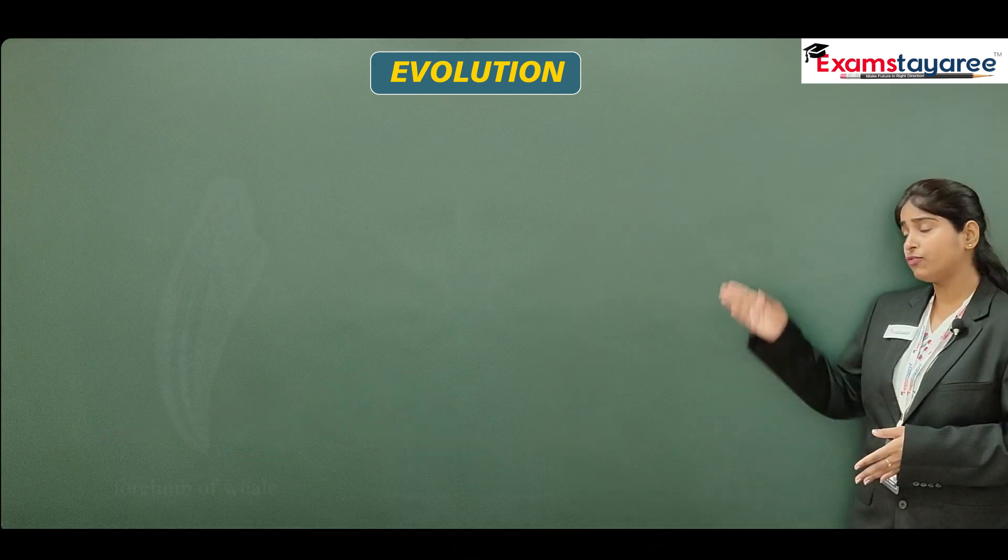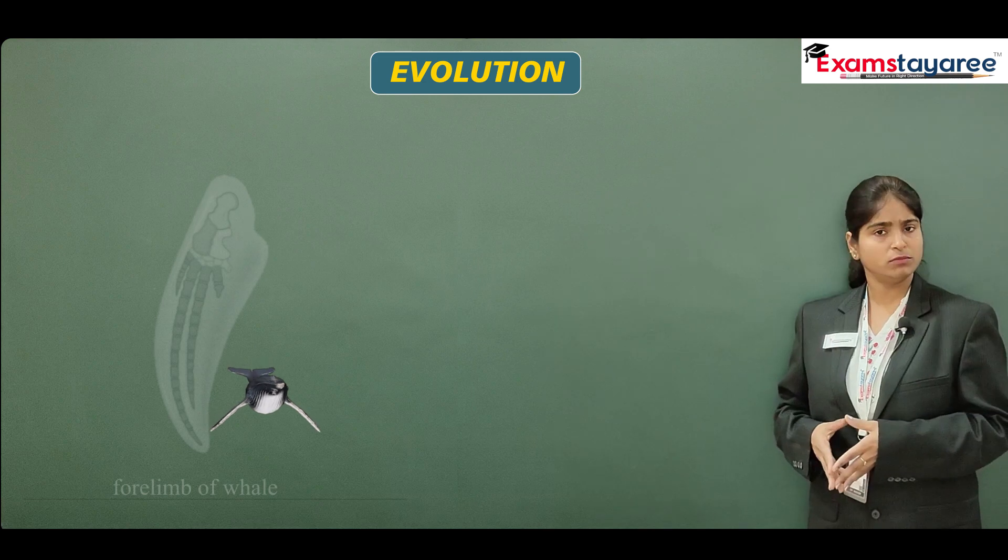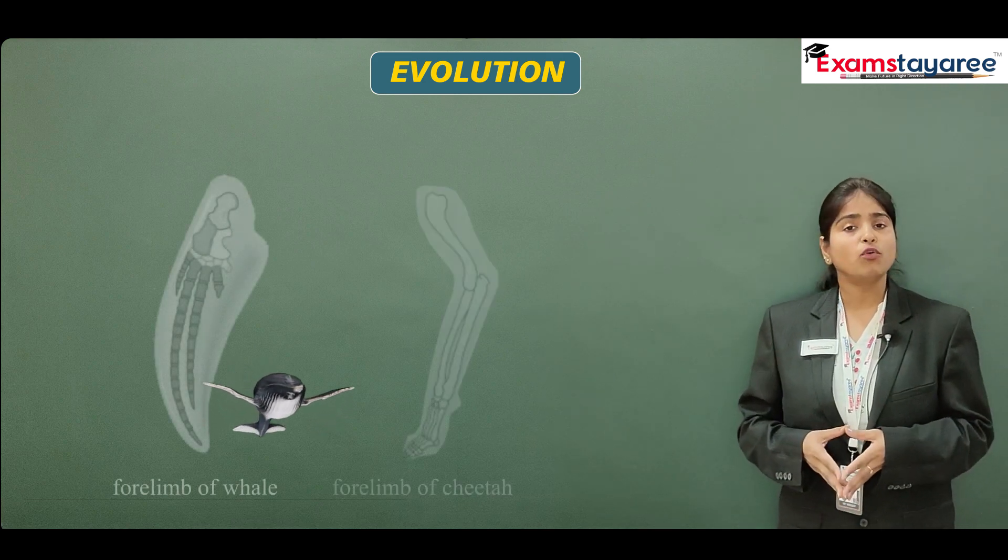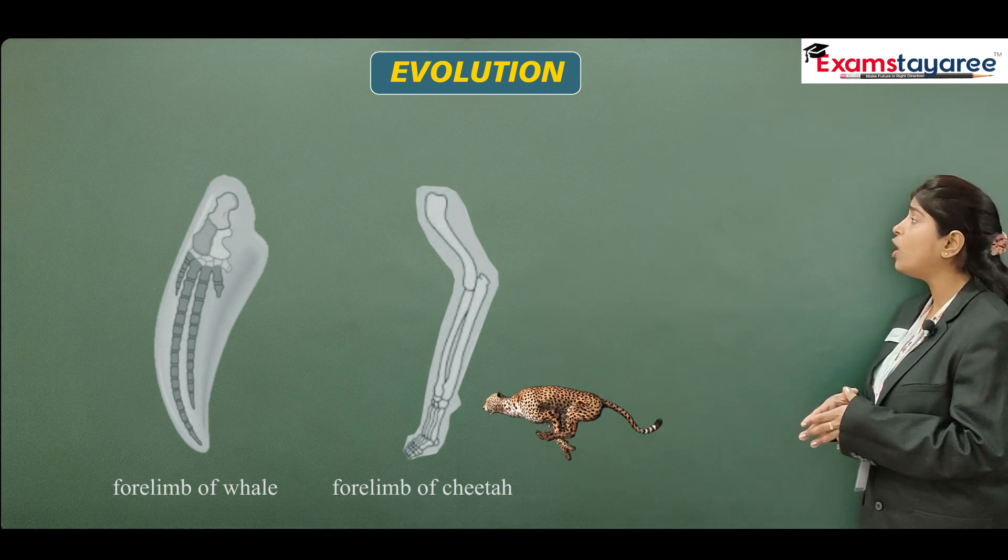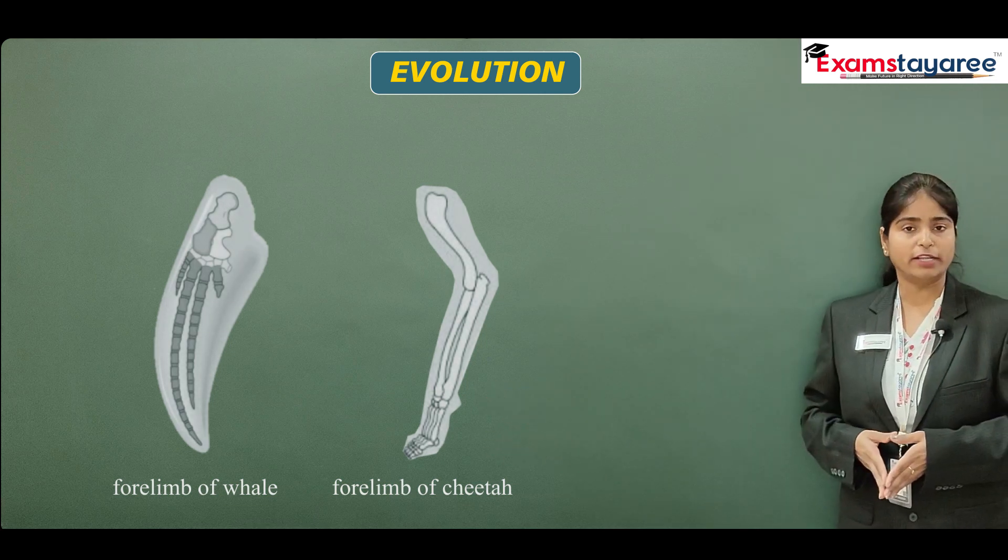In the same manner, we have forelimbs of whale used for swimming, forelimbs of cheetah used for running. They all are homologous organs.